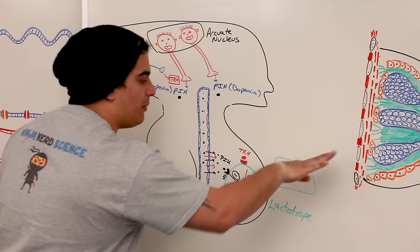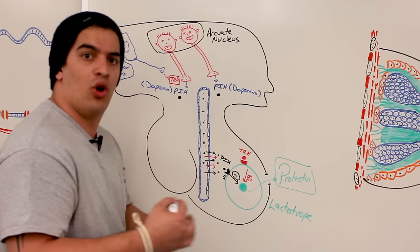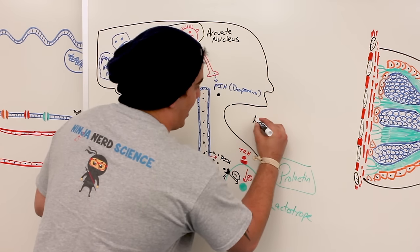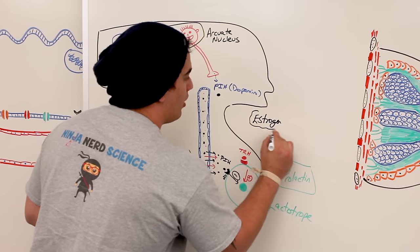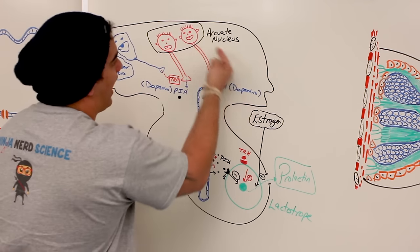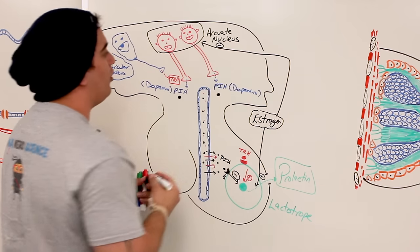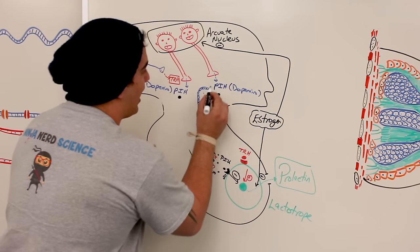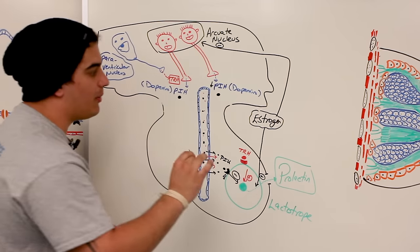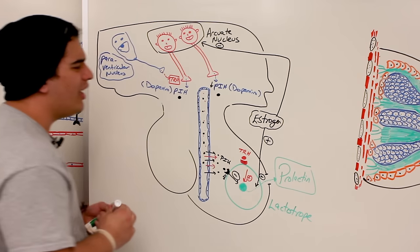What else can stimulate prolactin production? Females have a lot of estrogen produced from the ovaries. During the pregnancy process, the birthing process, and after, estrogen levels are extremely important for prolactin production. Estrogen can directly stimulate prolactin production, and it can also come over and inhibit the arcuate nucleus from producing prolactin inhibiting hormone. So with little prolactin inhibiting hormone, there's less negative effect on the lactotrope, meaning more prolactin is produced. Those are two stimulatory effects of estrogen.